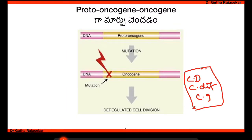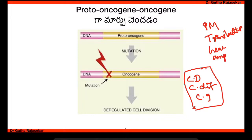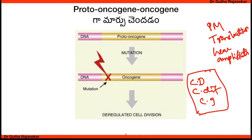There are a lot of mutations involved in cancer. These include point mutations — such as transversion, frameshift, addition, and deletion — chromosome translocations, and gene amplification.